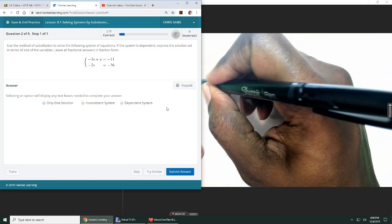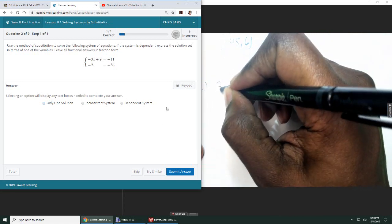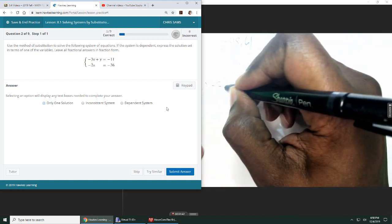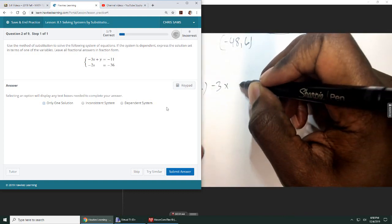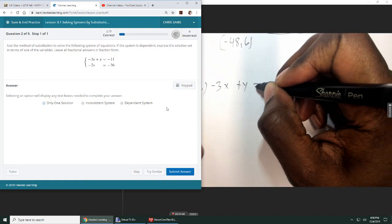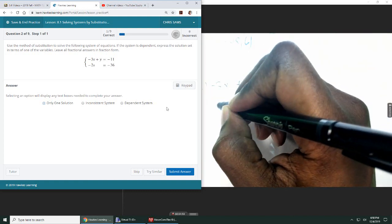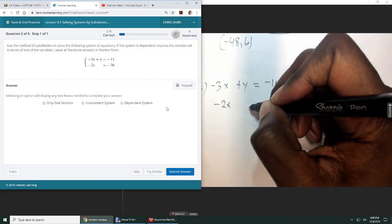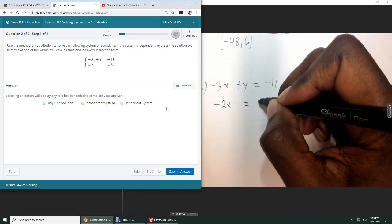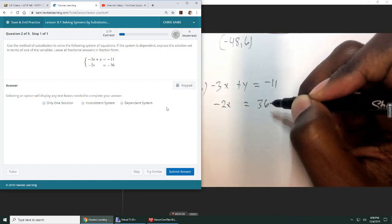So we're given the equation negative 3x plus y equals negative 11, and then the other equation we have is negative 2x equals negative 36.